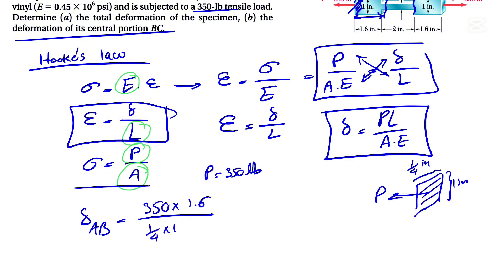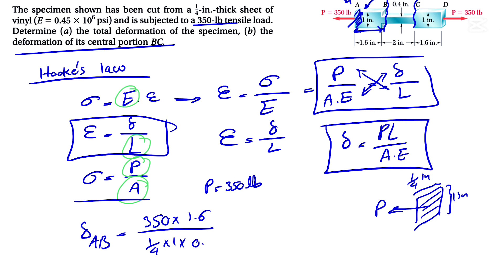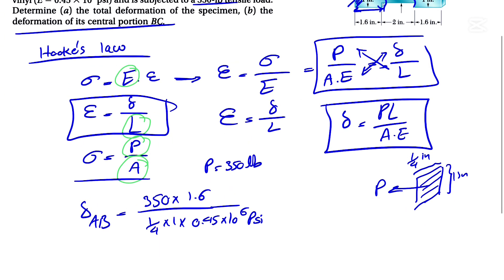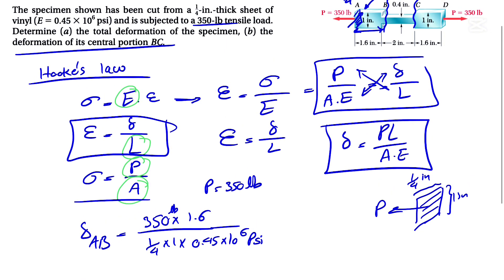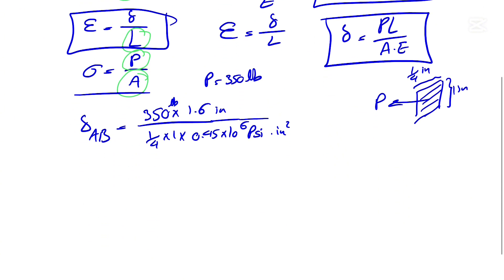So one over four times one times the Young's modulus which is 0.45 times 10 to the minus, 10 to the 6 psi. So regarding the units, we know our force is pound, 1.6 is the length is also in inches. And if we look at the denominator we have A which is our area, so we have an inch squared in the denominator which will be cancelled out with our psi. Psi is pound per inch squared, so at the end of this we're going to end up with inch unit.